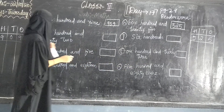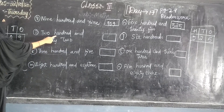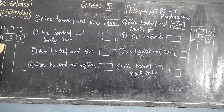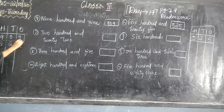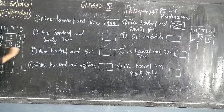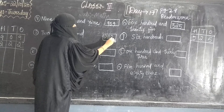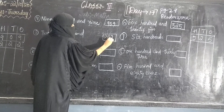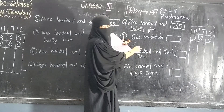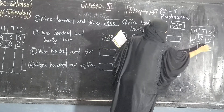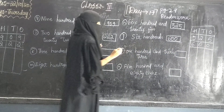Next: 2 hundred and 22 — 200 plus 22 — that is 222. Next 600. 1s bhi nahi hain, 10s bhi nahi hain, so 6 double 0 — that is 600. Okay kids.